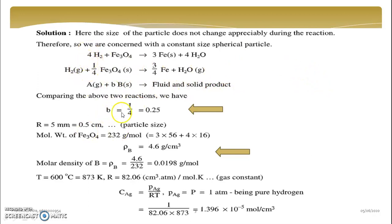Now here B will be 1 by 4, because B is a stoichiometric coefficient of solid. So it is 0.25. Arrow shows that you have to be careful on this step.